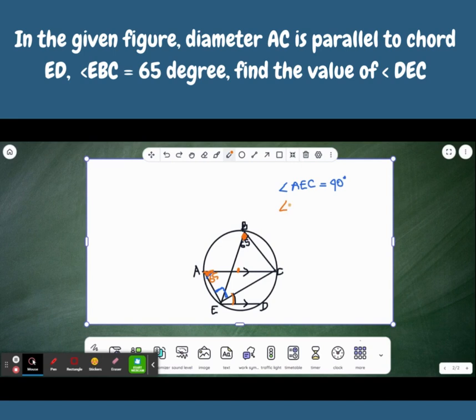Because angle EAC is equal to angle EBC. These two angles are equal. Now, I hope you can remember why I have considered these two angles as equal. Both the angles are in the same segment. Angles in the same segment are equal. We can see this arc EC, which is actually subtending these two angles. Angles in the same segment of a circle are equal. So, angle EAC and angle EBC, they are both equal and they are 65 degrees.